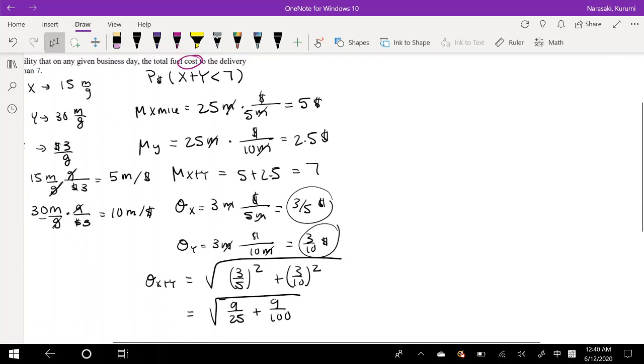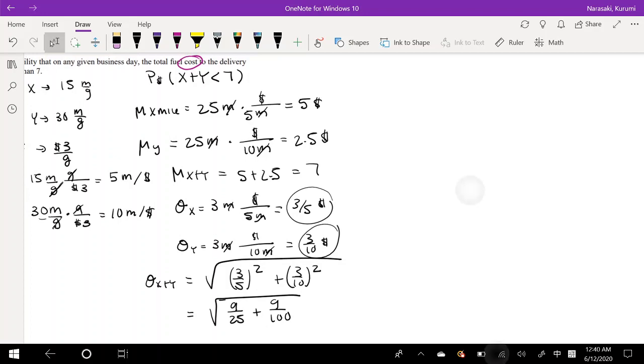I'm going to actually shift this way instead. So then we can just assign, we can say we're trying to find the probability that x plus y is less than 7. So we can find the z-score.